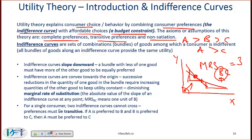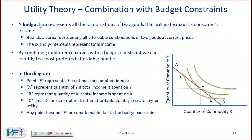For a single consumer, two indifference curves cannot cross. Because of the transitive preferences assumption — if A is preferred to B and B is preferred to C, then A must be preferred to C — indifference curves cannot cross.